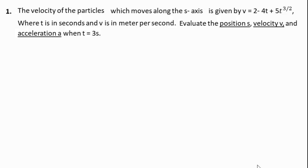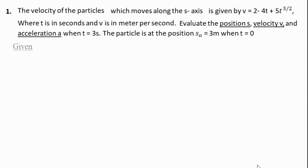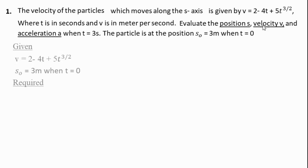The initial condition is given: the particle is at initial position s-naught, which is equal to 3 meters, when t is equal to zero seconds. So the initial distance is 3 meters. We need to find: s is equal to how much, v is equal to how much, and a is equal to how much, at t = 3 seconds.